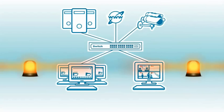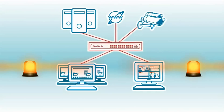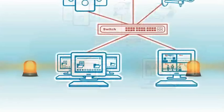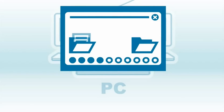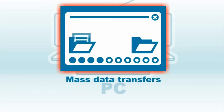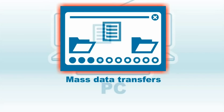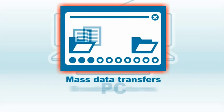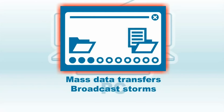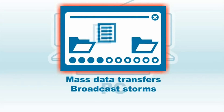From time to time, your network can experience periods of heavy traffic, clogging bandwidth during events such as mass data transfers like nightly backups or P2P downloads, or broadcast storms, which may occur due to a worm outbreak.